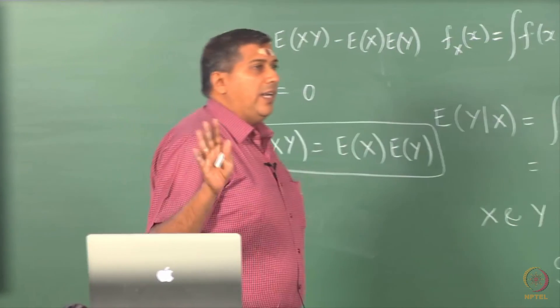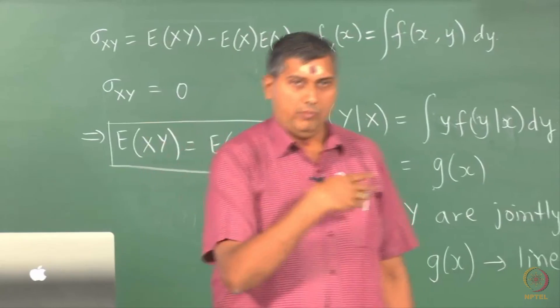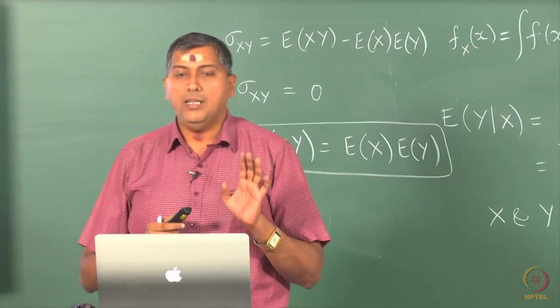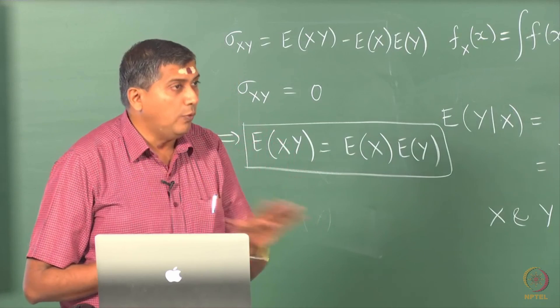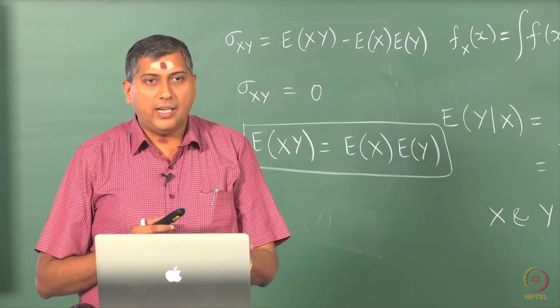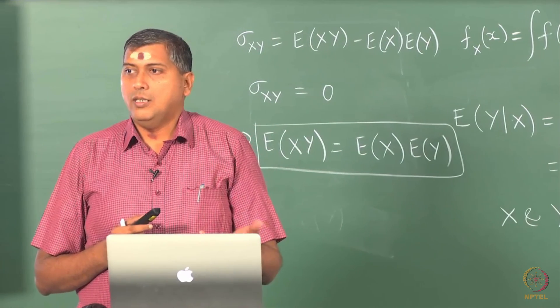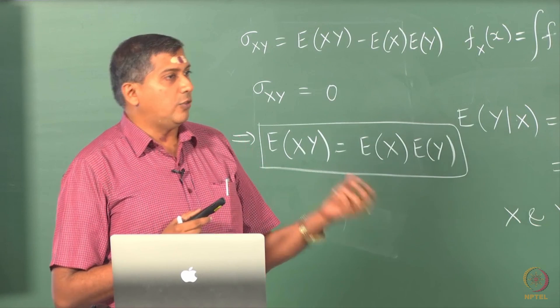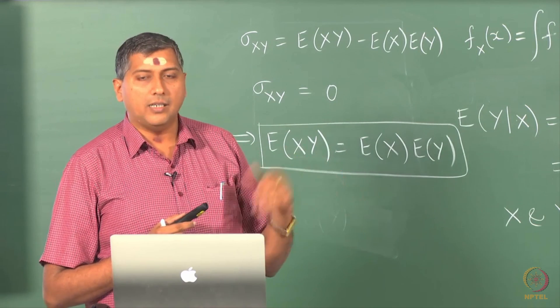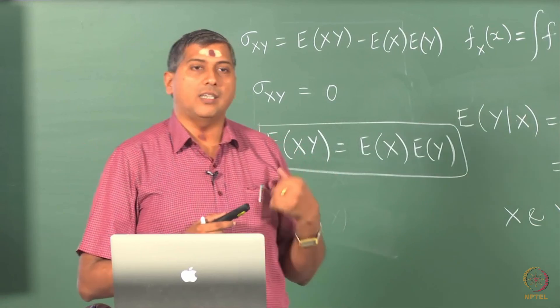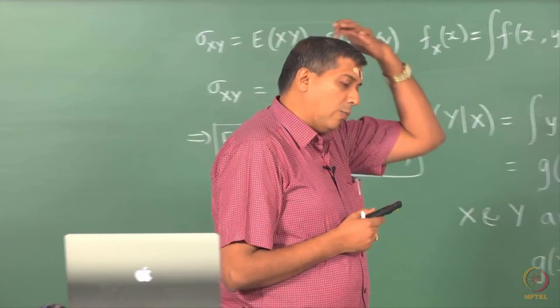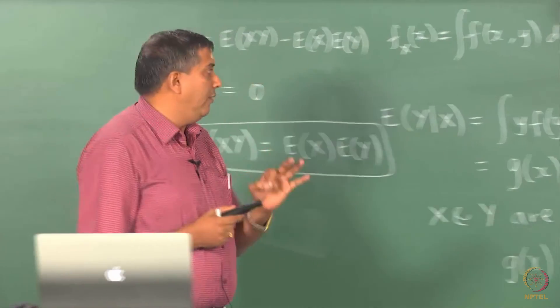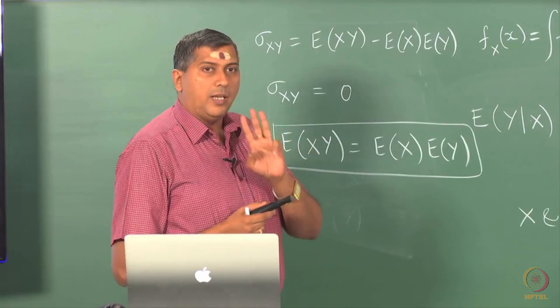Independence rules out all nonlinear relation, any relation, of course, that means linear also, whereas uncorrelatedness actually rules out only linear relations. We have not proved that, we have not seen that yet as to how lack of correlation or lack of covariance means that there is no linear relation. That we will have to talk about correlation and then we will also have to talk about partial correlation and so on. But this is something to keep in mind and we will leave this class with an important point.